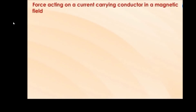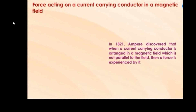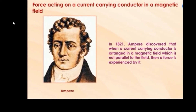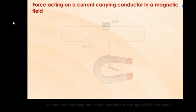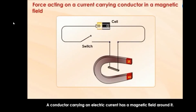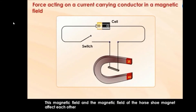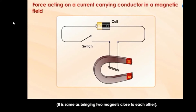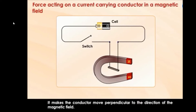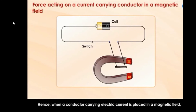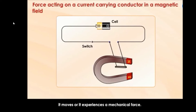Force acting on a current carrying conductor in a magnetic field. In 1821, Ampere discovered that when a current carrying conductor is arranged in a magnetic field which is not parallel to the field, then a force is experienced by it. A conductor carrying an electric current has a magnetic field around it. This magnetic field and the magnetic field of a horseshoe magnet affect each other, making the conductor move perpendicular to the direction of the magnetic field. Hence, when a conductor carrying electric current is placed in a magnetic field, it moves or experiences a mechanical force.